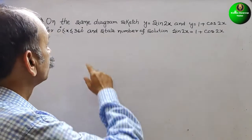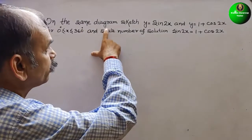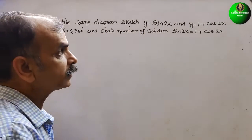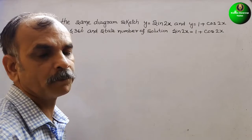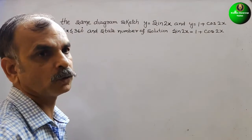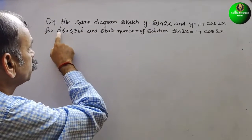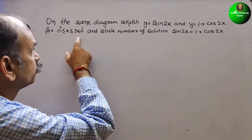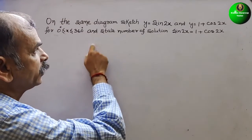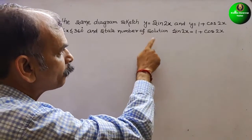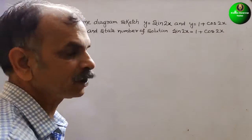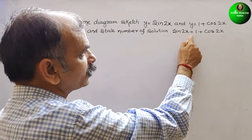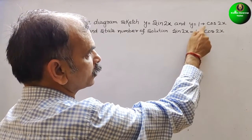The question asks us to sketch y = sin2x and y = 1 + cos2x for 0° ≤ x ≤ 360°, and state the number of solutions. What they have given is sin2x = 1 + cos2x — these two expressions.